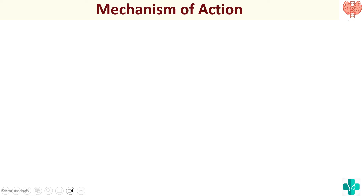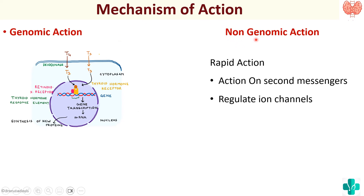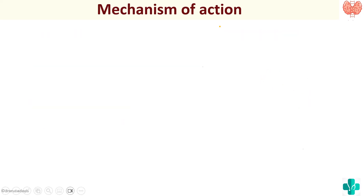Now let's see the mechanism of action of thyroid hormone. The thyroid hormone that is released has a genomic action as well as a non-genomic action. Genomic action means it enters the cell and affects gene transcription — this is the predominant type of mechanism of action. Non-genomic actions cause the rapid action of thyroid hormones and occur via second messengers.